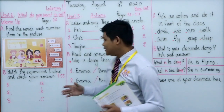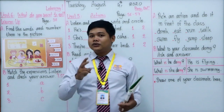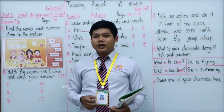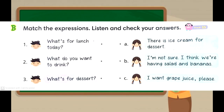Welcome back. Now it's time to listen to Track 55. I will play the track two times. Are you ready? Listen — Unit 6: What do you want to eat? Section B. One: What's for lunch today? — I'm not sure, I think we're having salad and bananas. Two: What do you want to drink? — I want grape juice please. Three: What's for dessert? — There is ice cream for dessert.